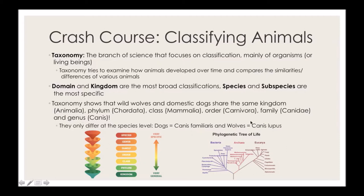The phylogenetic tree of life shows that there are three domains. From each domain, we break off into subcategories, which then further break down into subcategories. Domain and kingdom are the most broad classifications. Bacteria, archaea, and eukaryota are the three domains. Animals are their own kingdom that fall under eukaryotes, or multicellular organisms.